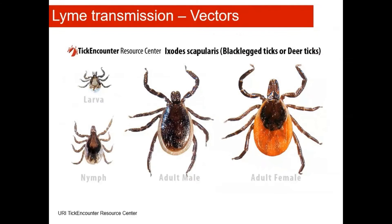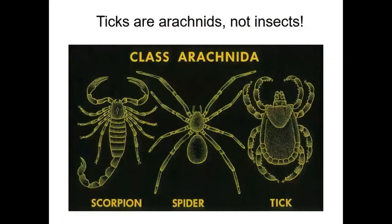Let's talk a bit about the ticks that transmit the bacteria that causes Lyme disease. The ticks that transmit Lyme disease in this part of the country are the black-legged tick, or more commonly known as the deer tick. Here you can see the adult female deer tick and the adult male deer tick, and over here is the nymphal stage of the tick, which is also capable of transmitting the bacteria that causes Lyme disease.